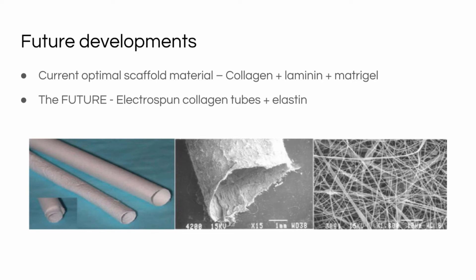The optimal scaffold material currently available is collagen and laminin present in high concentrations of Matrigel. For the future, we could expect electrospun collagen tubes with elastin to replicate the physiological properties of cardiac tissues.